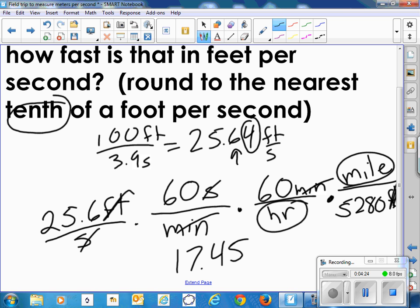If we wanted to round that to the nearest tenth, the 5 is anything 5 or above, we round up. So if I wanted to round to the nearest tenth, I would round that to 17.5 miles per hour.